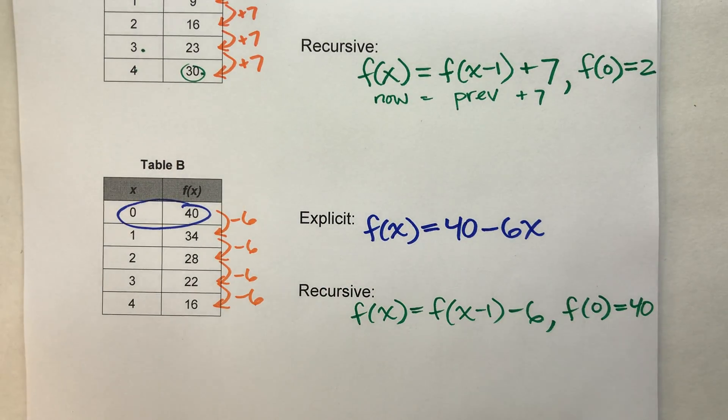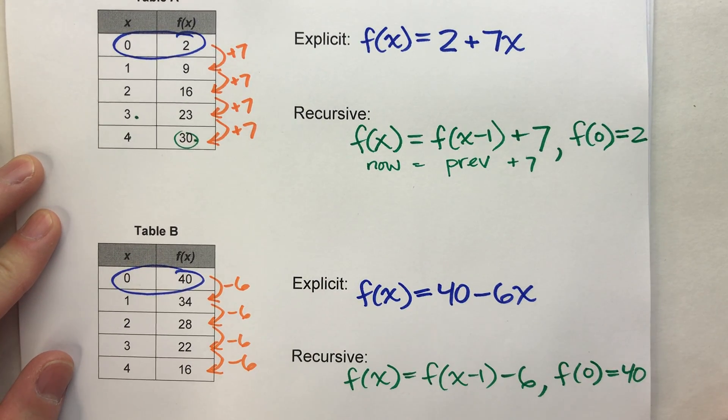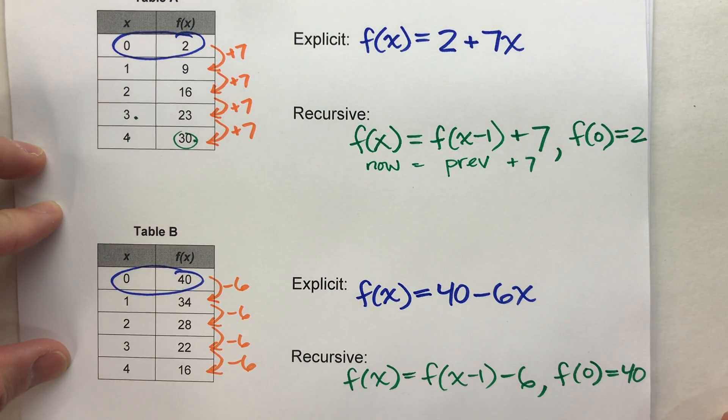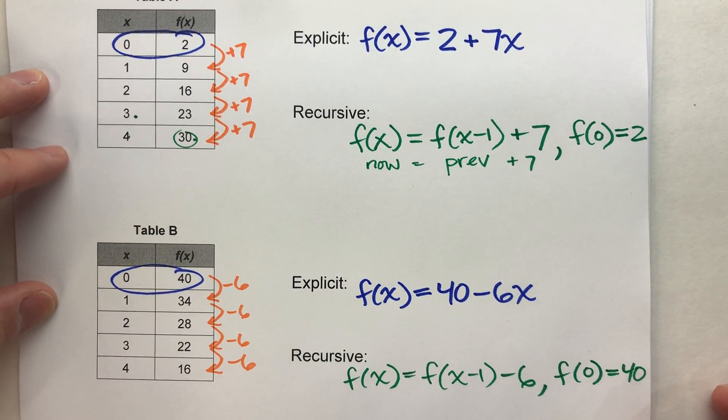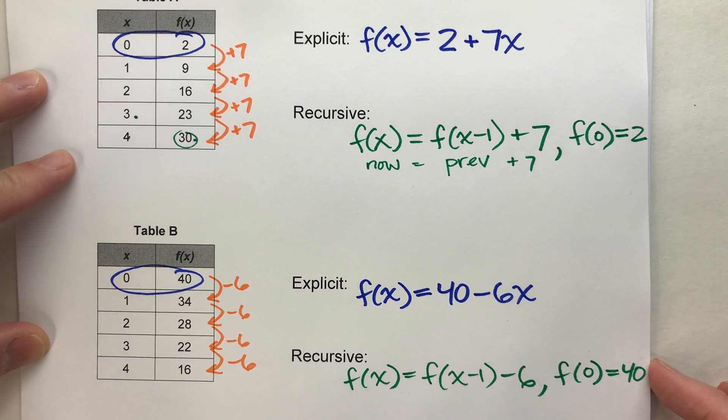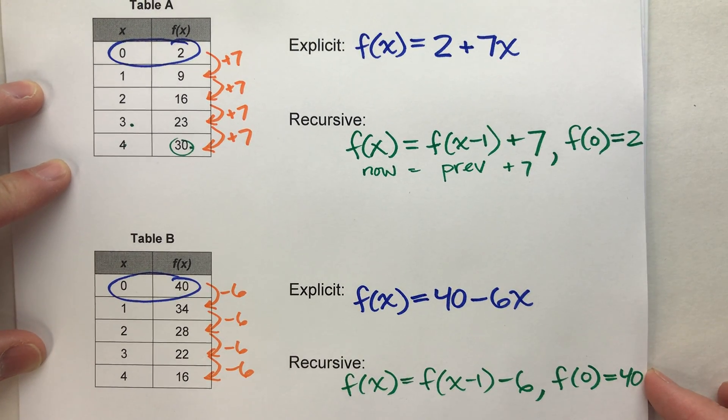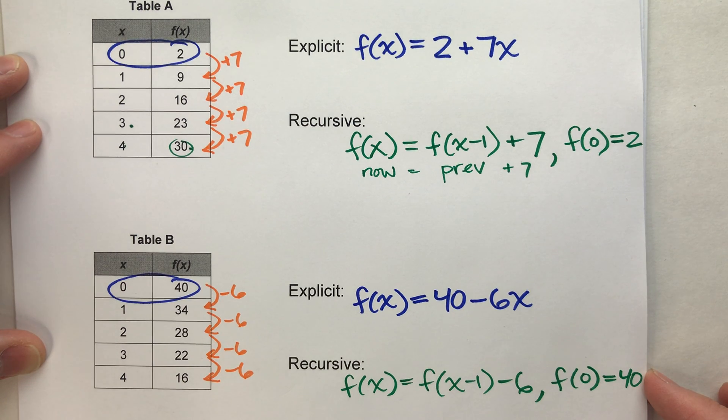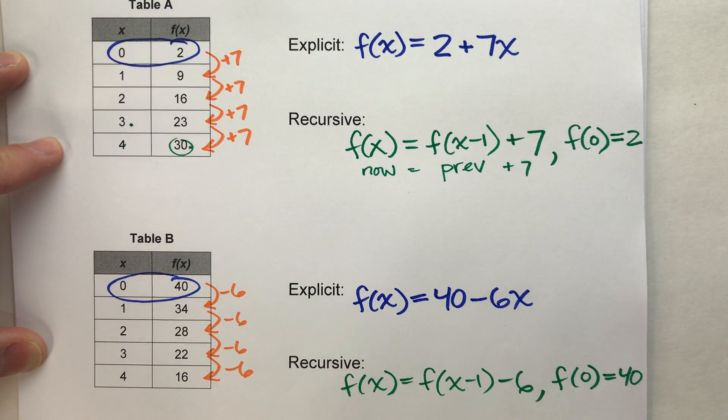So that is how to write an explicit and recursive equation for arithmetic sequences. Hopefully, you found this video helpful. If you did, please hit that like button. Also, subscribe because it really helps us out. But with that being said, good luck on your math, and I will see you next time.